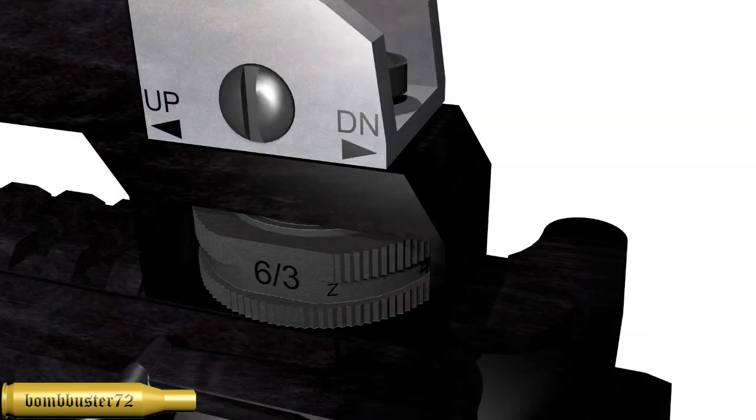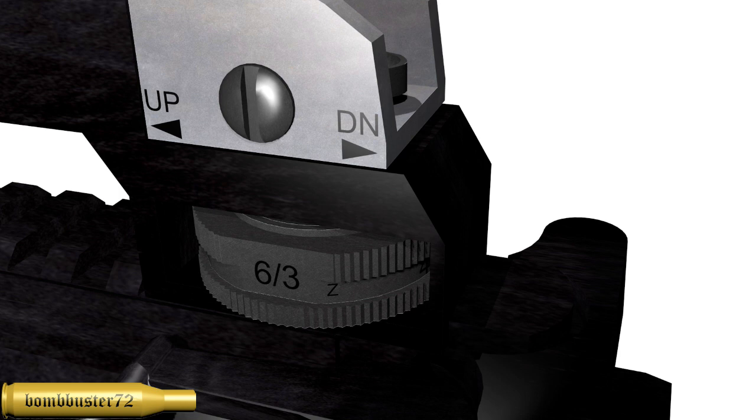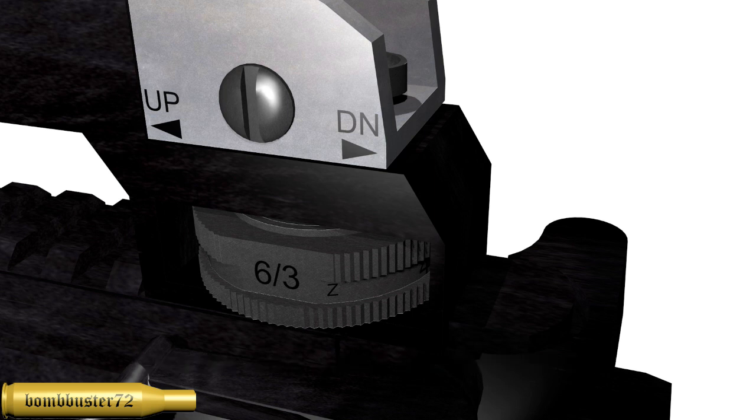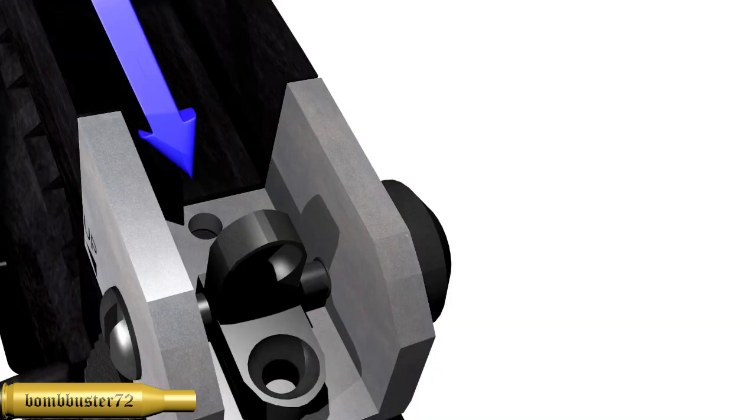We need to take our elevation, our range elevation knob on the rear of our A2 sights, and we need to back it off counter-clockwise all the way to the 6-3 setting. Now this 6-3 is 600 meters and 300 meter distances. Once we've done that, we need to make sure we flip the small aperture up. This exposes the set screw hole in the top of the sight.